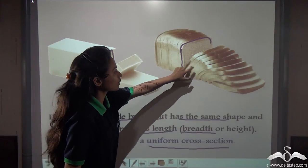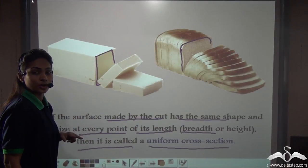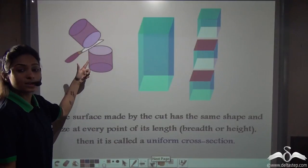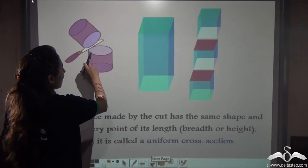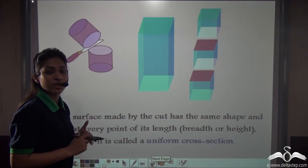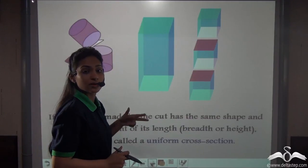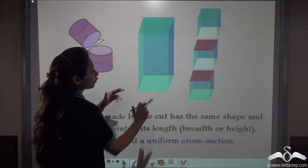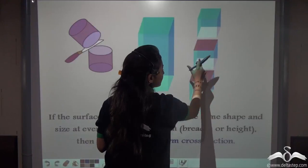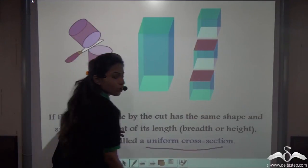The cross-section made in this block of butter is also uniform. Take the example of a solid cylinder — if you cut the cylinder at any point, the face created has the same shape and the same size. Even in the case of a cuboid or a cube, whether you cut it along its length, breadth, or height, the face created has the same shape and the same size. So this is called a uniform cross-section.